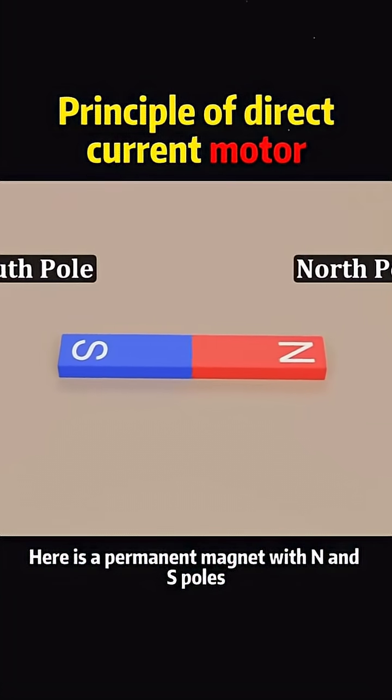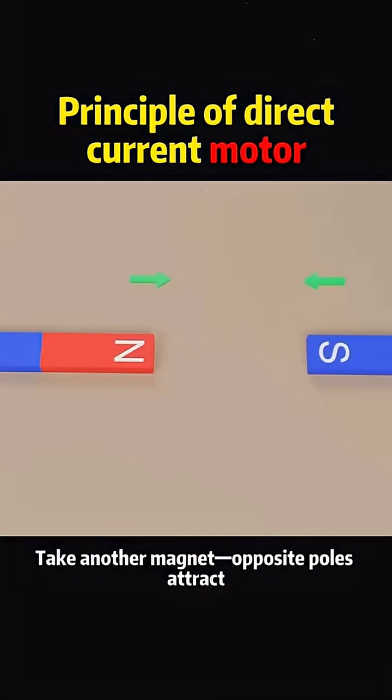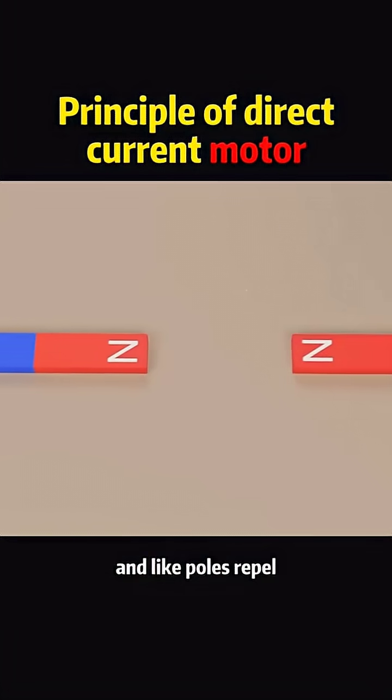Here is a permanent magnet with N and S poles. Take another magnet, opposite poles attract, and like poles repel.